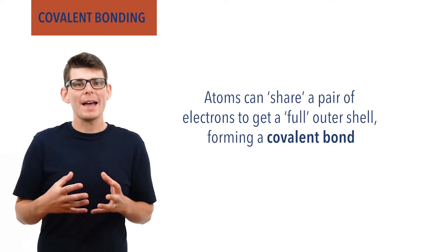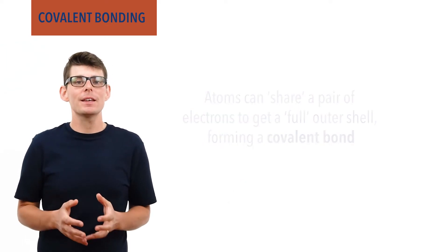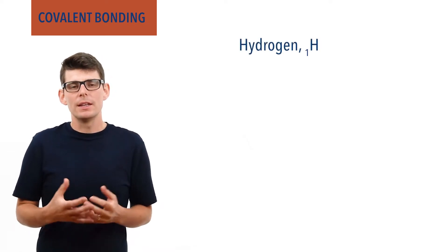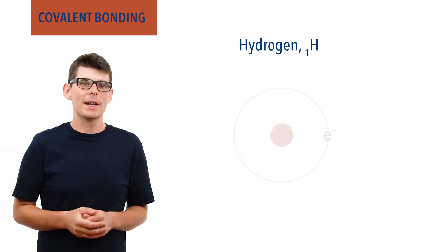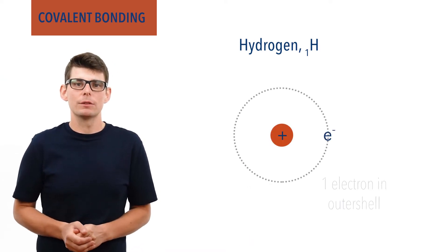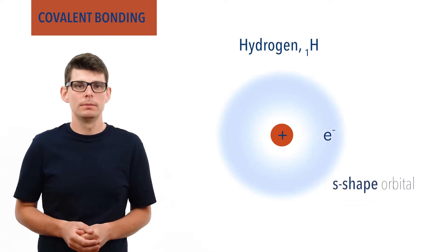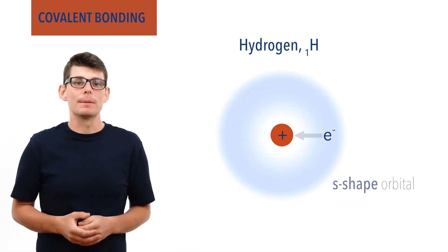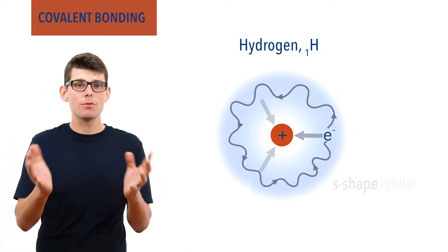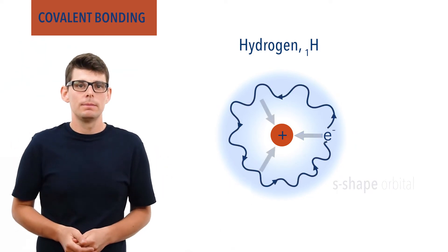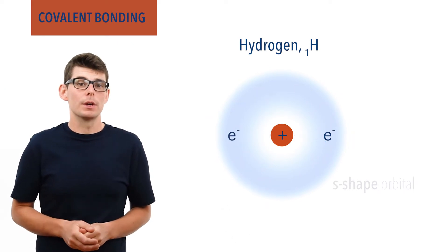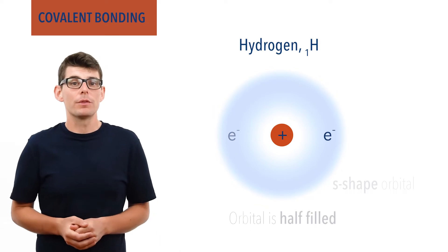To show how this sharing can arise, let's take a look at a simple example of hydrogen. A single atom of hydrogen has one electron and one proton, meaning it has one electron in its outer shell, in an s-shaped orbital. The electron is attracted to the positively charged nucleus and is free to exist anywhere in this region of space. The s orbital is able to hold two electrons, so at the moment it is half filled.